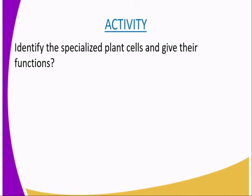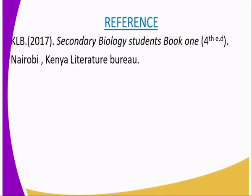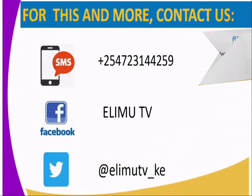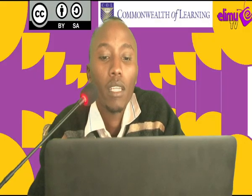We are now going to have an activity whereby we identify the specialized plant cells and give their functions. Remember, there are specialized plant cells and animal cells, but in our activity we are only dealing with the specialized plant cells. For further reference, you can refer to KLB Secondary Biology Students Book 1, Nairobi. You can contact us via SMS to the number on the screen, message us on our Facebook page at ElimuTV, or tweet us at ElimuTV underscore Kenya. Thank you for watching — Let Us Learn Together.